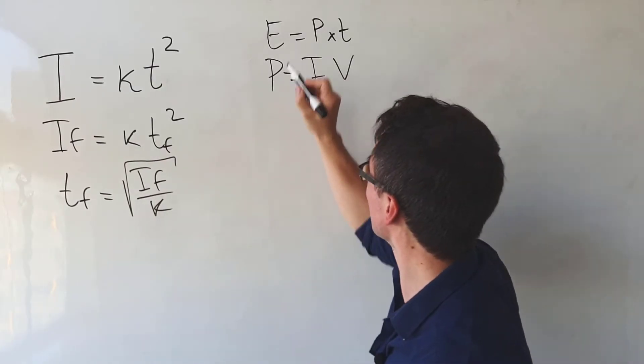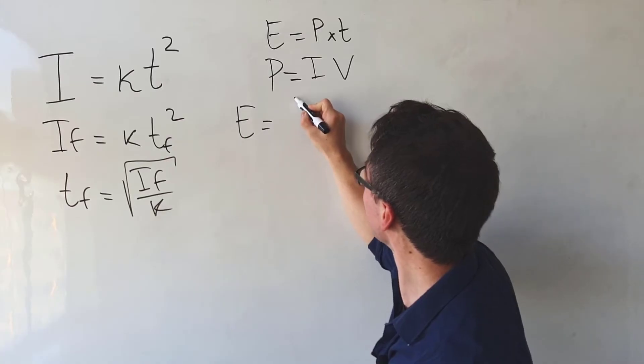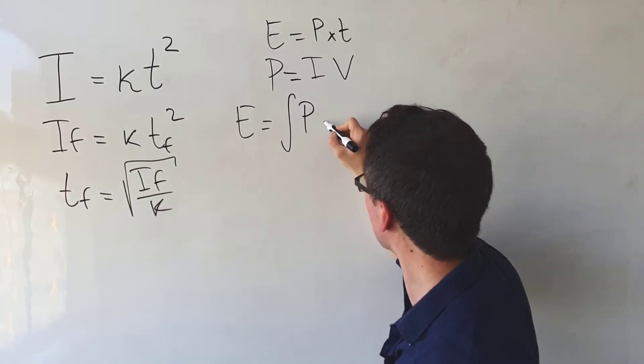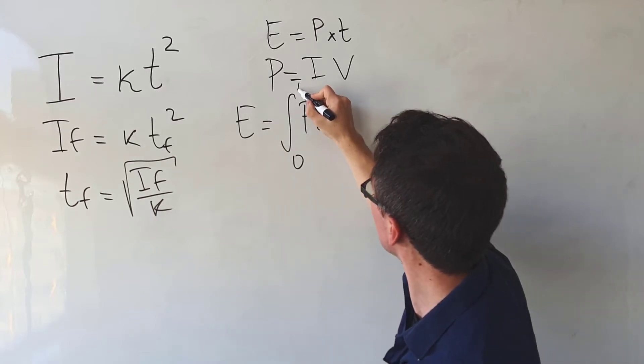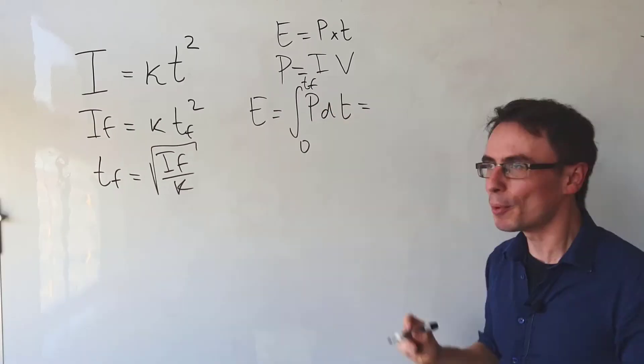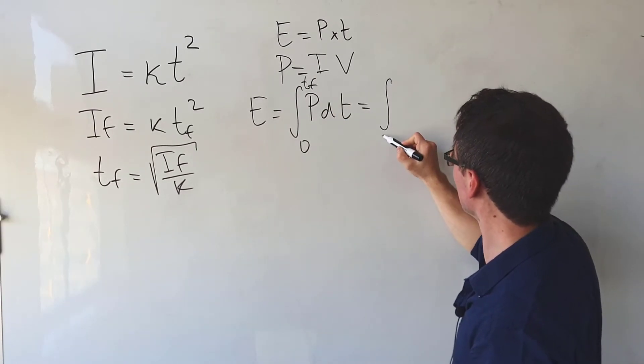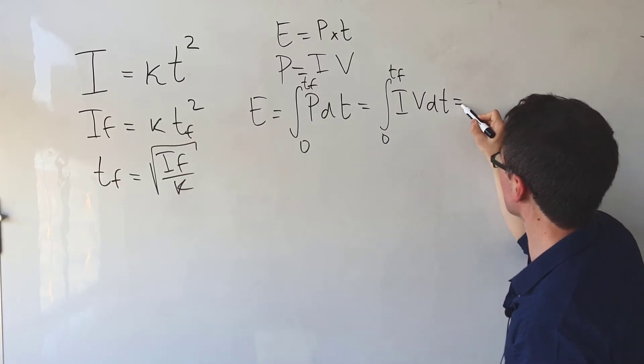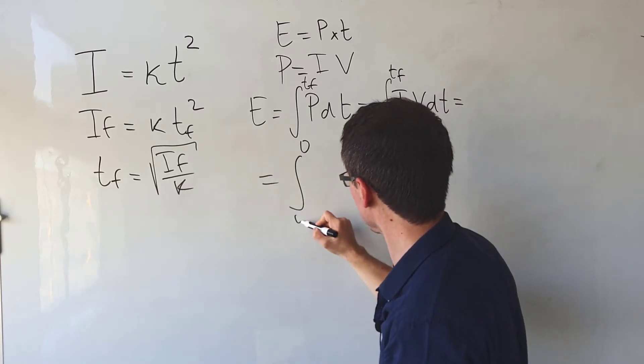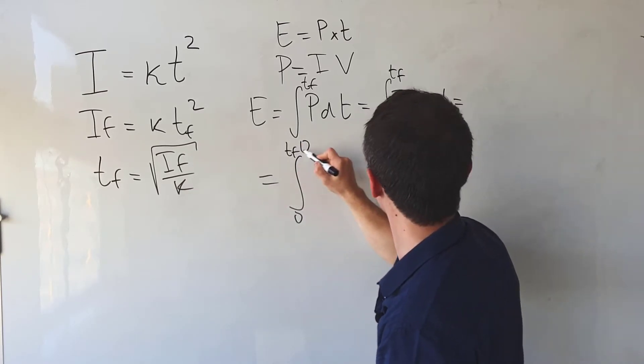So what we really need to do to find the energy is integrate the power with respect to time from t is equal to zero to t final. This will just be equal to the integral from zero to tf of i times v dt.